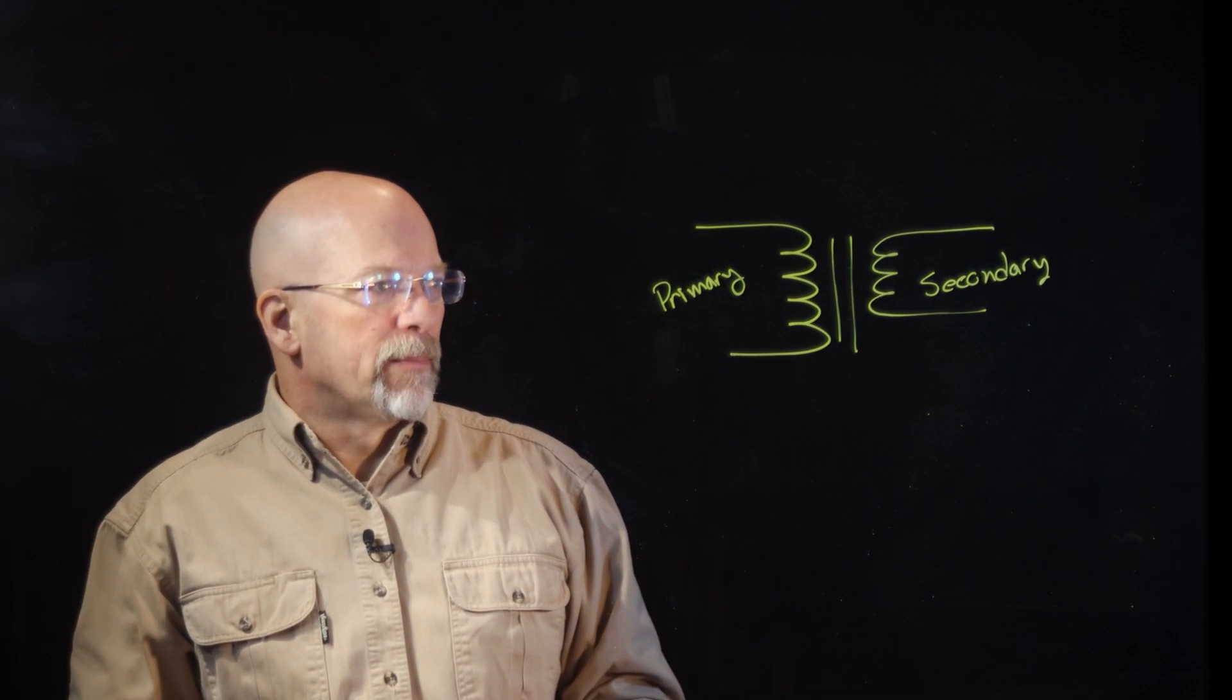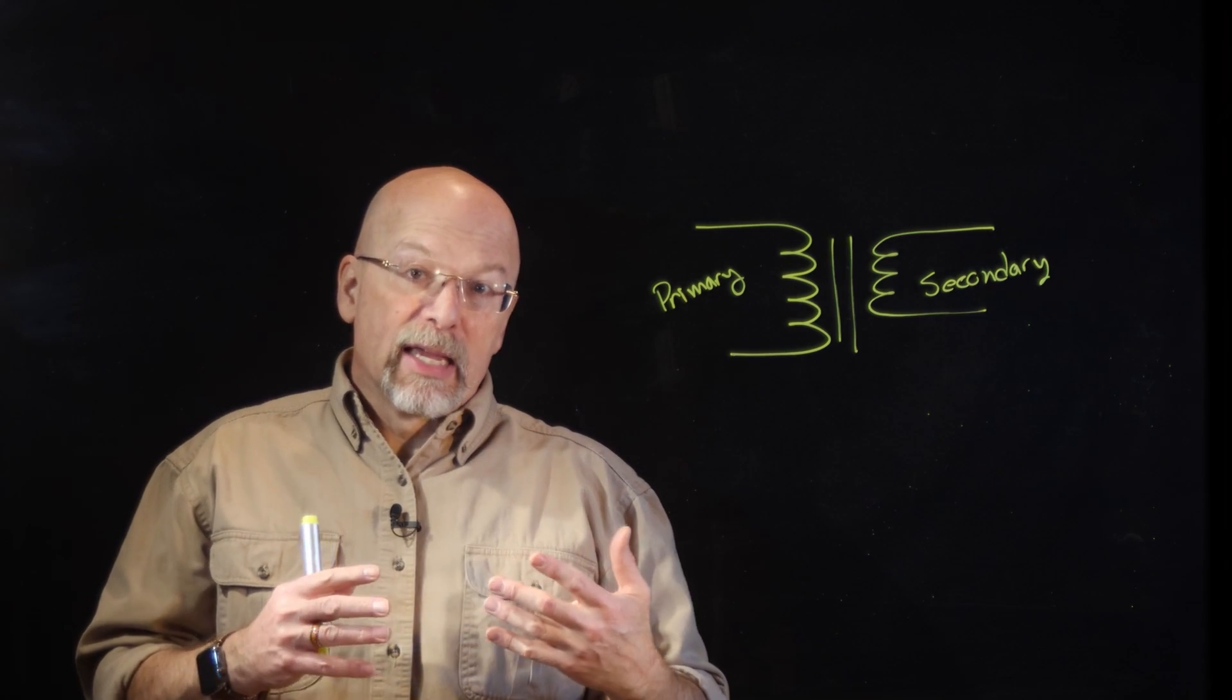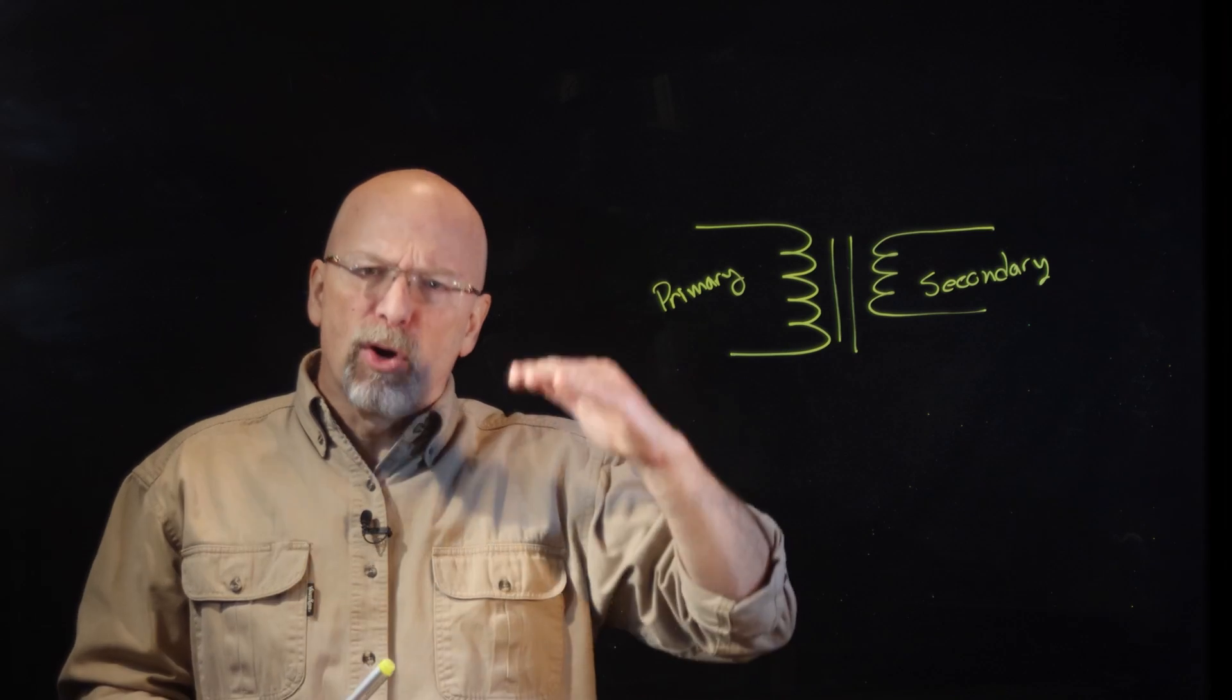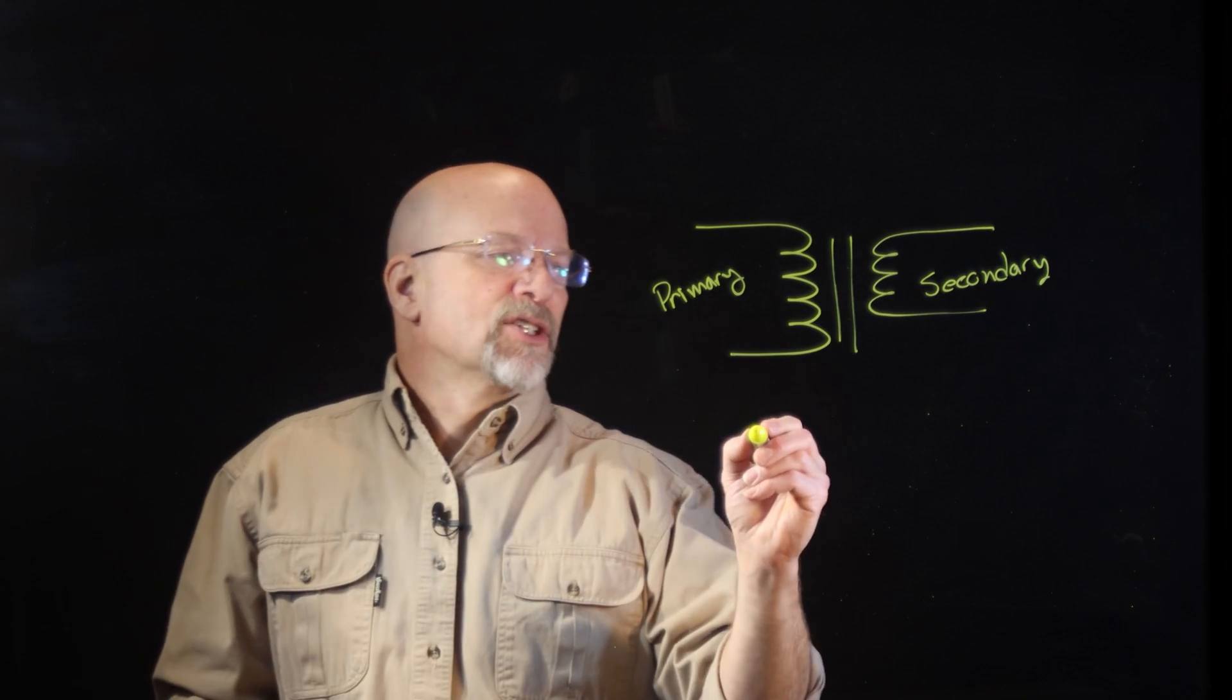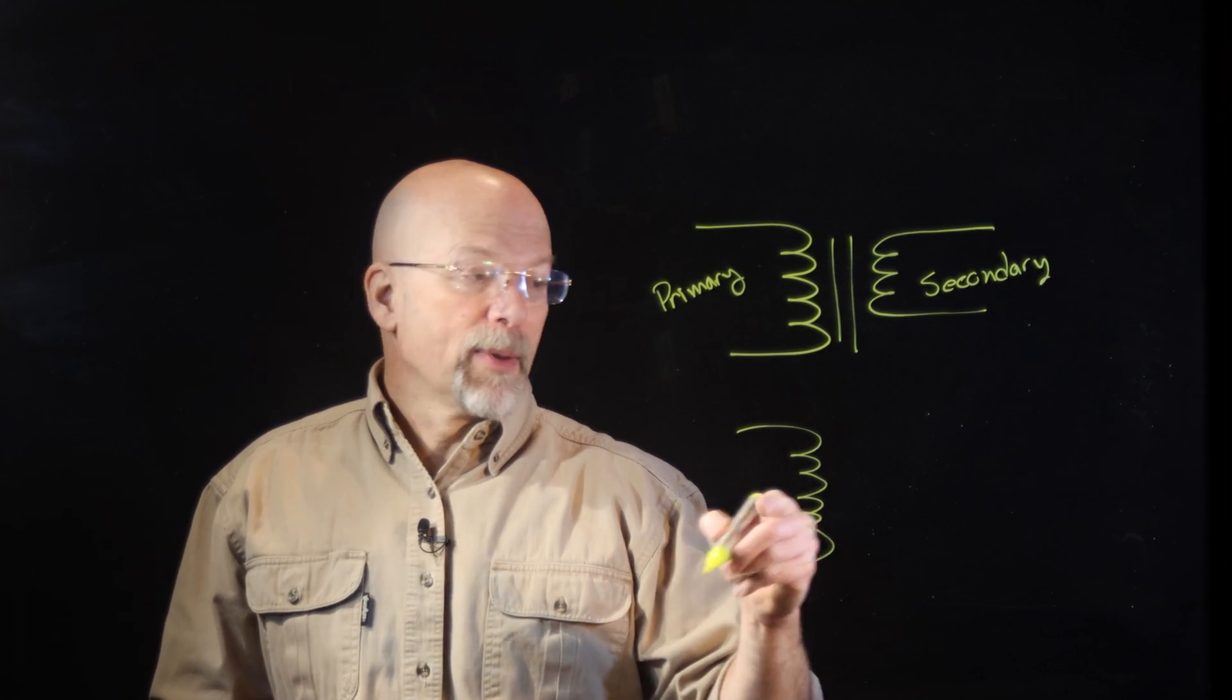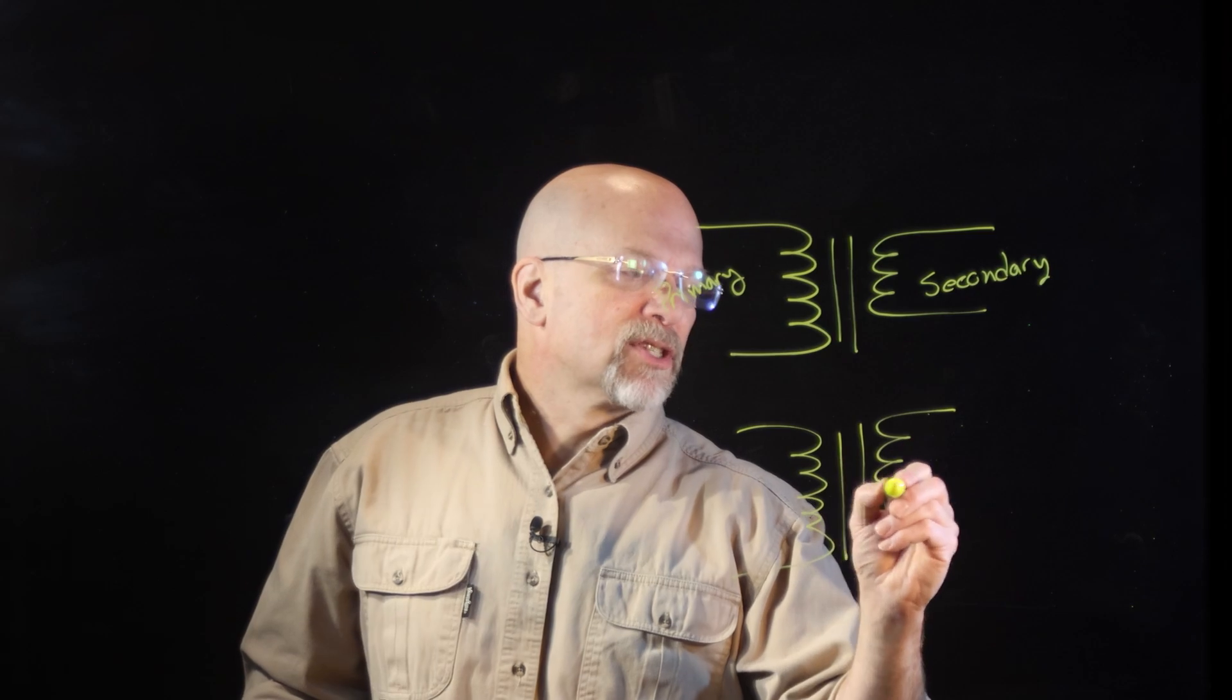Now whenever you're looking at something like a power supply that is in a computer, it turns out we're going to need a number of different levels. And so you may see something that looks like this where you've got the primary on the one side, the iron core, and then you've got the secondary.